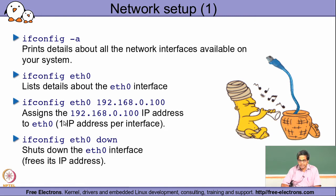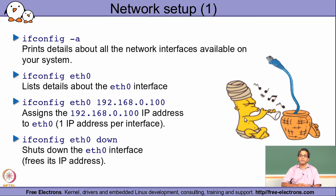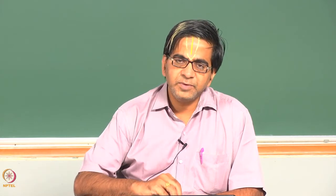If I want to bring down the corresponding interface, I say ifconfig eth0 down. Apart from the IP address, I could also specify the netmask as an additional argument using the netmask keyword, and then give whatever netmask I want to set. I can also configure the gateway — meaning every packet originating out of the system through this interface should have a particular gateway IP address configured, so packets will be sent to that gateway.